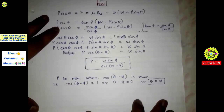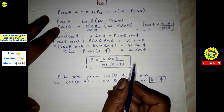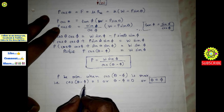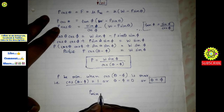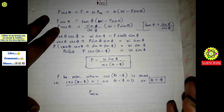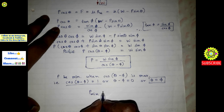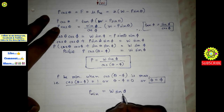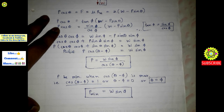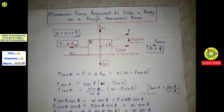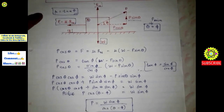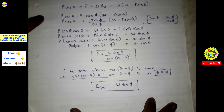Applying this condition — cos(θ minus φ) equal to 1 — to our equation, the minimum force required to slide a body on a rough horizontal plane is: P_min is equal to W sin φ. This is the final equation for minimum effort required to slide a body on a rough horizontal plane. Thank you students for watching this video. Like, share, comment, and subscribe to my channel.